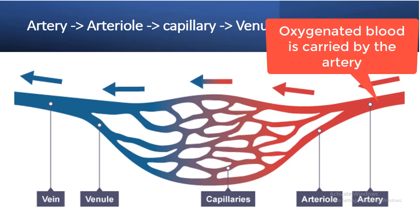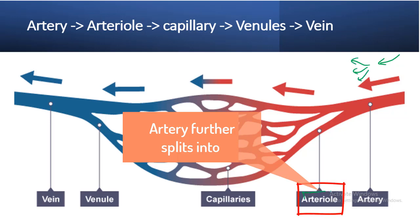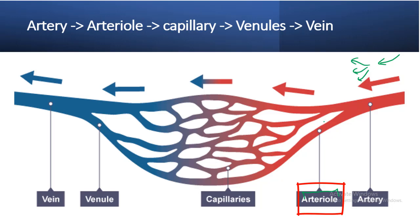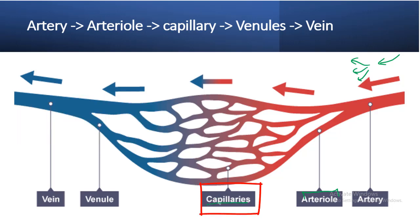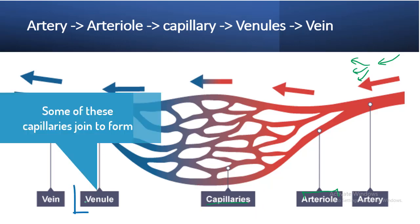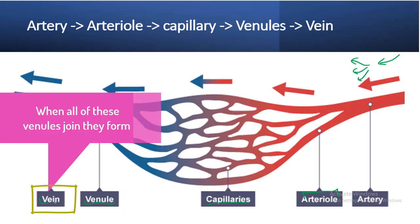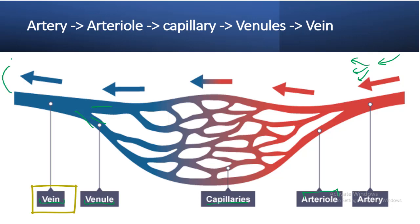From the heart, oxygenated blood is carried by the artery. This artery further splits into arterioles, which then divide to form capillaries. Some capillaries join to form venules, and when all venules join together, a vein is formed, which carries the blood back to the heart. So the pathway is: artery → arterioles → capillaries → venules → vein.